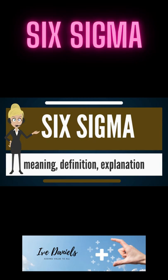Each Six Sigma project carried out within an organization follows a defined sequence of steps and has specific value targets — for example, reduce process cycle time, reduce pollution, reduce costs, increase customer satisfaction, and increase profits.